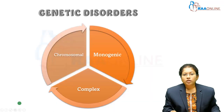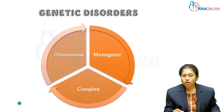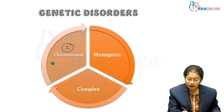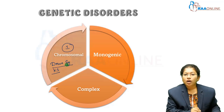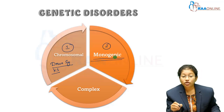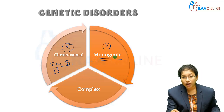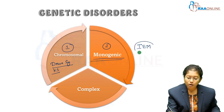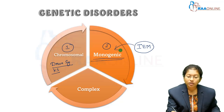Before that, genetic disorders fall into three categories. The first one is chromosomal — for example, Down syndrome and Klinefelter syndrome. The second one is monogenic, where a single gene may be defective due to any mutation. Your IEM, that is inborn errors of metabolism, falls into this category.